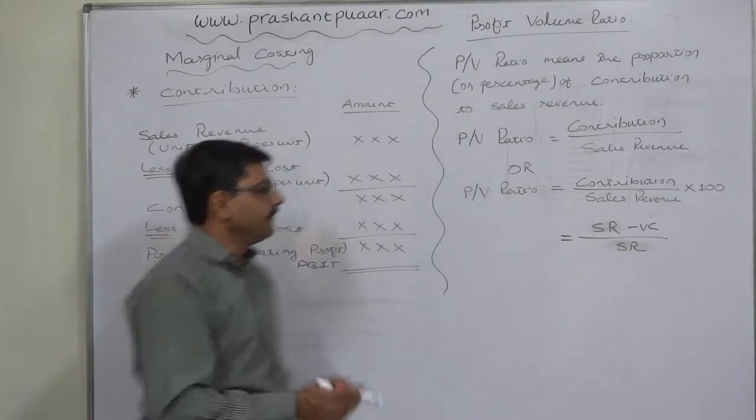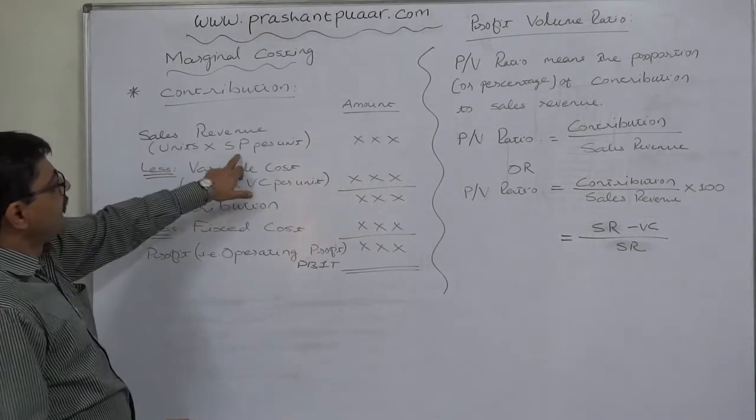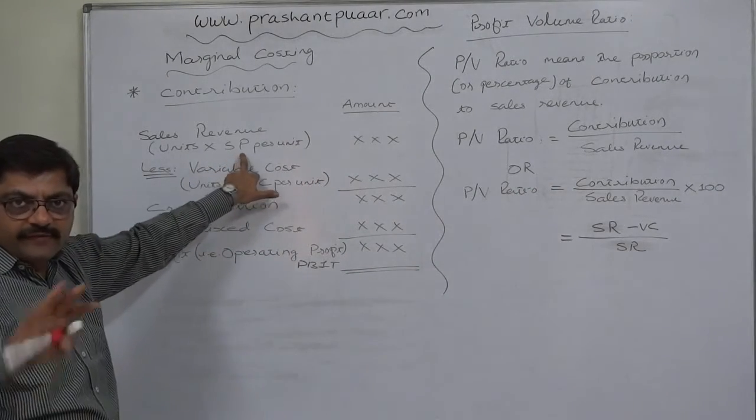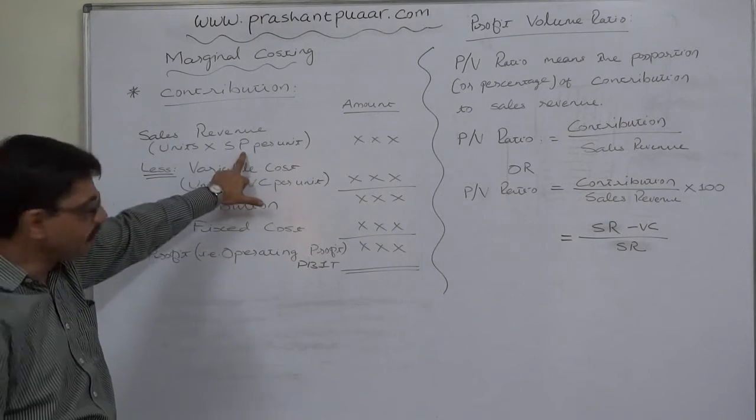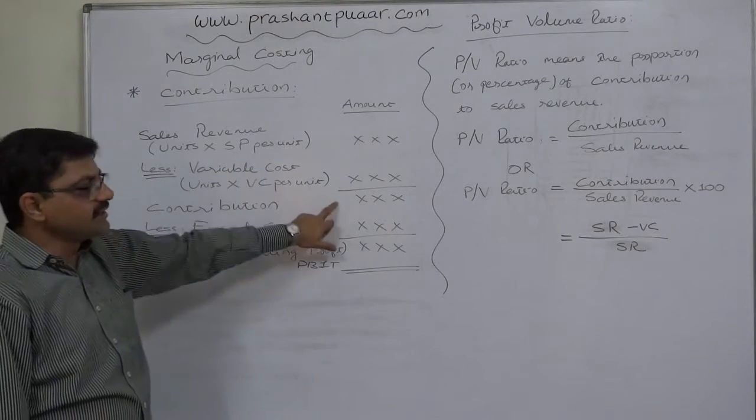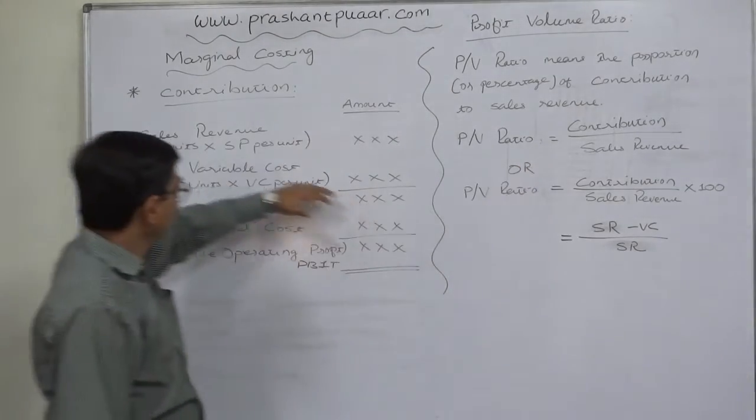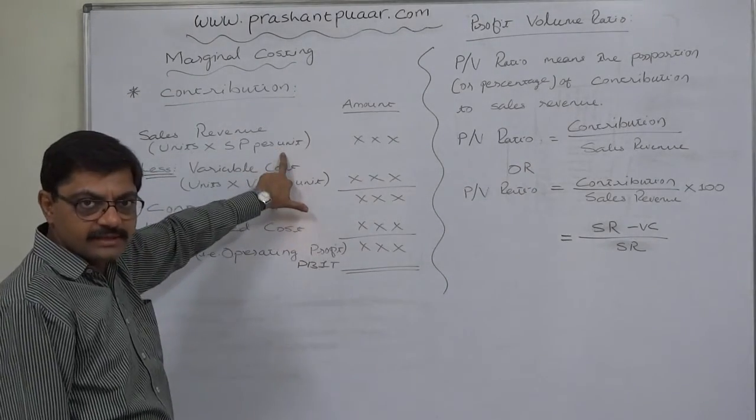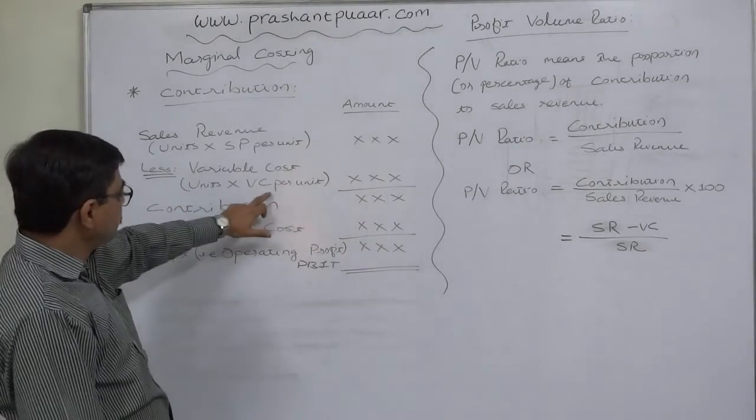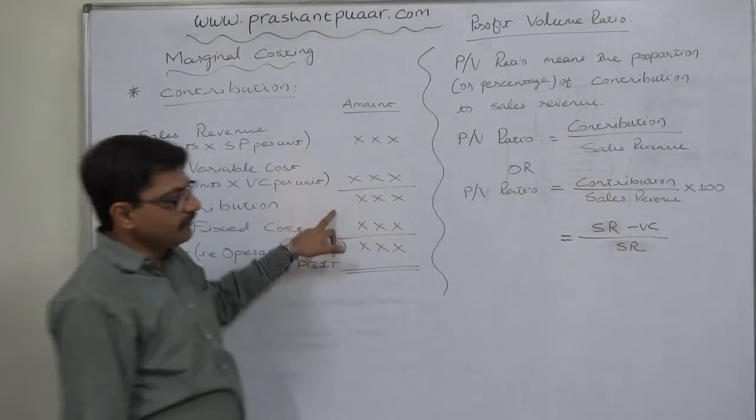The factors. Which factors? First, selling price per unit. If there is any change in selling price, there will be change in contribution and in PV ratio. If we increase the selling price without any change in variable cost, our contribution will increase.